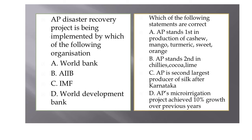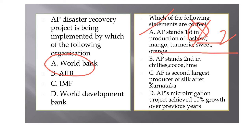The AP Disaster Recovery Program project is run under the World Bank. For agricultural rankings: Andhra Pradesh stands second in cashew, mango, turmeric, and sweet orange production; it stands first in chilies, cocoa, and lime. The answer is option C — AP stands second after Karnataka in silk production. Option D is incorrect as only 8% growth has been achieved through micro irrigation projects in AP.